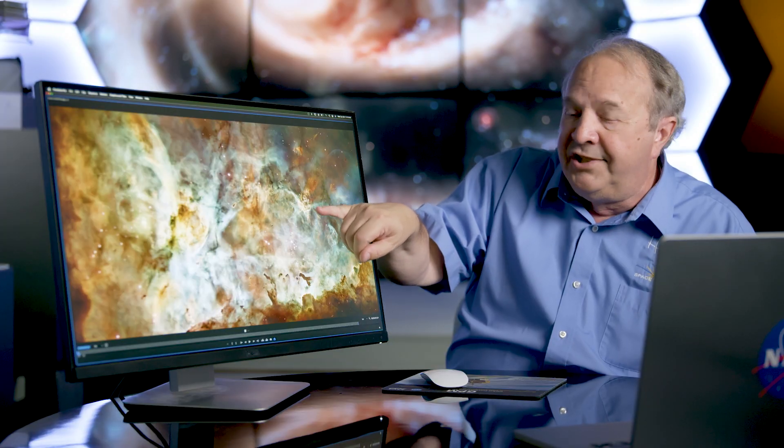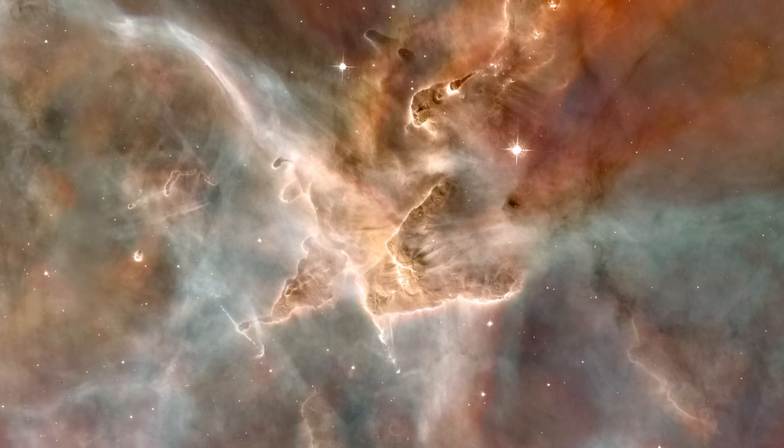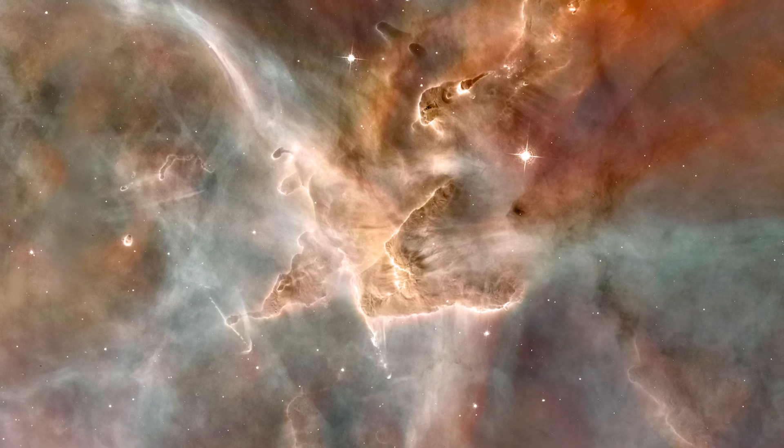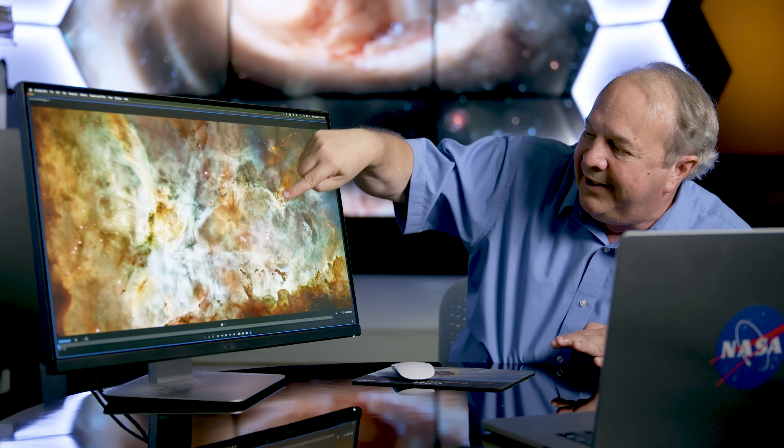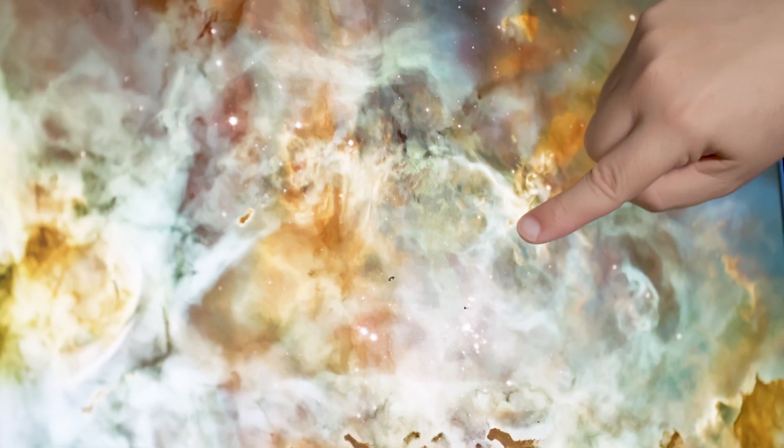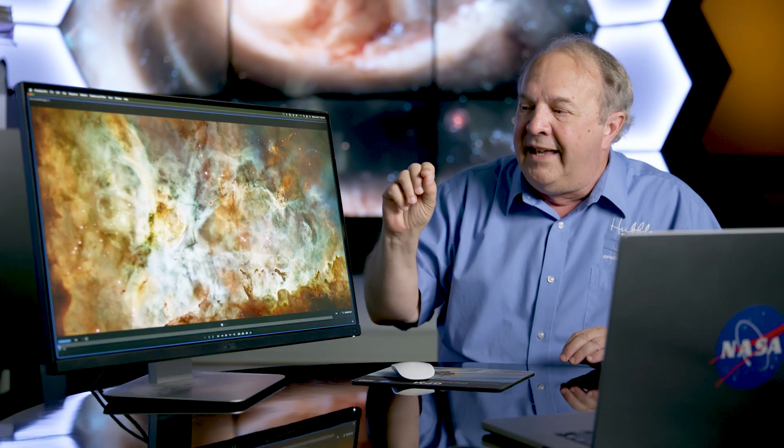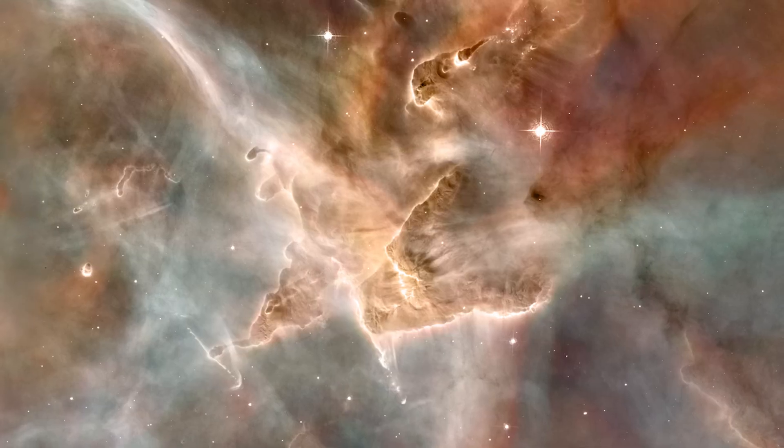You see here Mystic Mountain, which is an example of a star formation area. The top of Mystic Mountain is down to the left and then the base of it is out this way. So as you see, Mystic Mountain is only a tiny fraction of the complex beauty of this nebula.